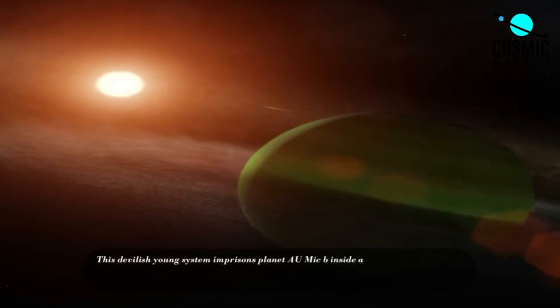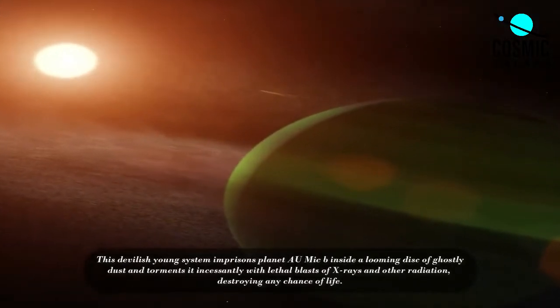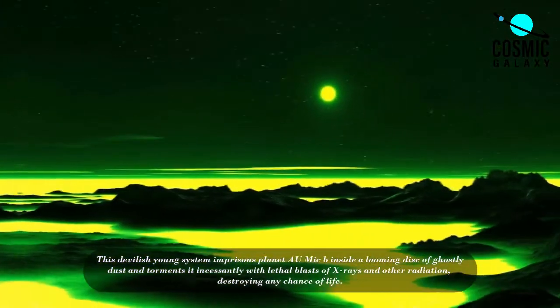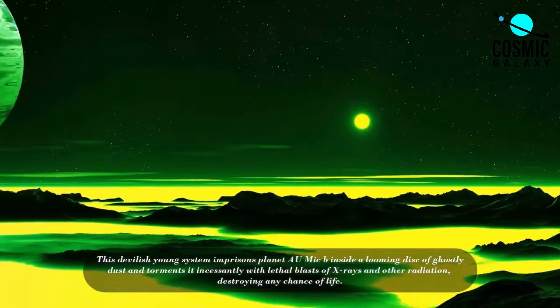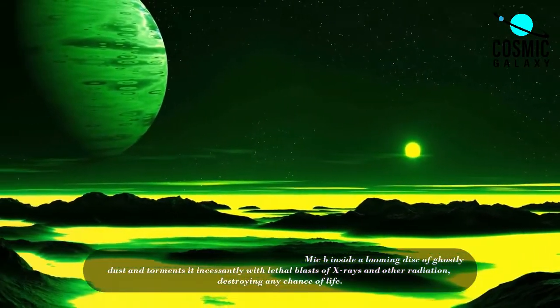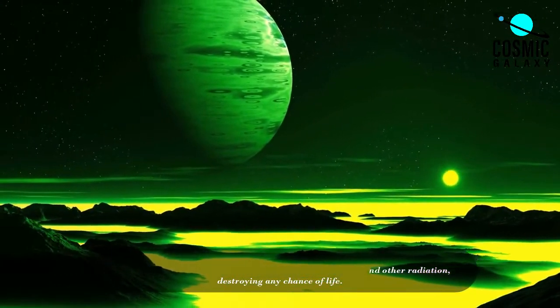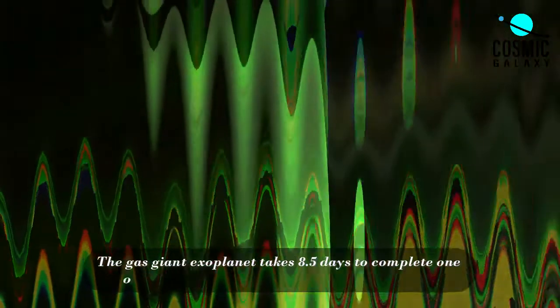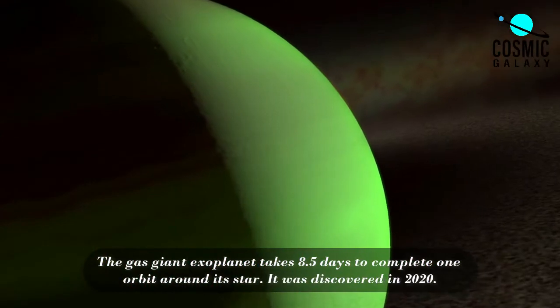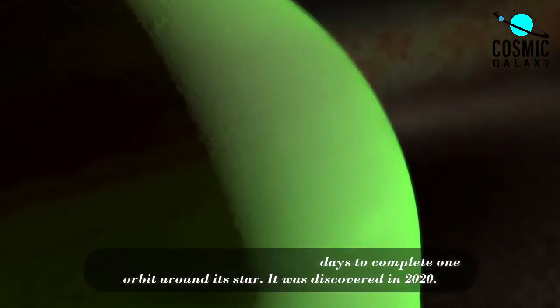This devilish young system imprisons planet AU-MICb inside a looming disk of ghostly dust and torments it incessantly with lethal blasts of x-rays and other radiation, destroying any chance of life. The gas giant exoplanet takes 8.5 days to complete one orbit around its star. It was discovered in 2020.